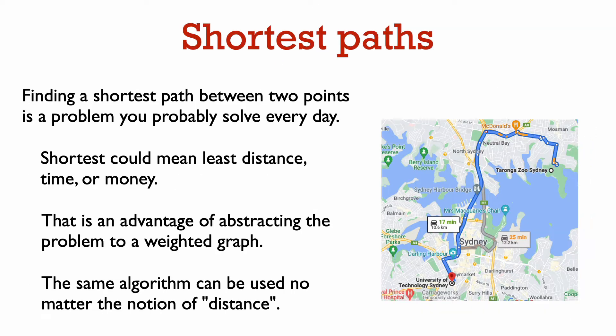Next, we come to probably the most familiar of all graph problems, one that most of us solve every day — finding the shortest path between two locations. Shortest can mean anything here: the least amount of distance, time, or money. That's one advantage of using the abstract language of graphs. Edge weights can represent anything, and our shortest path algorithm can be applied independently of the meaning of the edge weight.